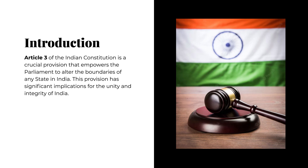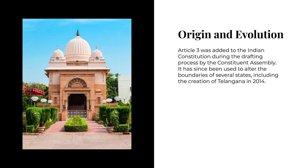Article 3 of the Indian Constitution is a crucial provision that empowers Parliament to alter the boundaries of any state in India. This provision has significant implications for the unity and integrity of India. Article 3 was added during the drafting process by the Constituent Assembly, and has since been used to alter the boundaries of several states, including the creation of Telangana in 2014.